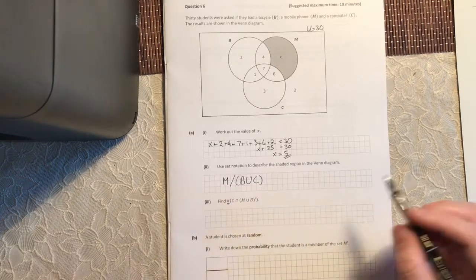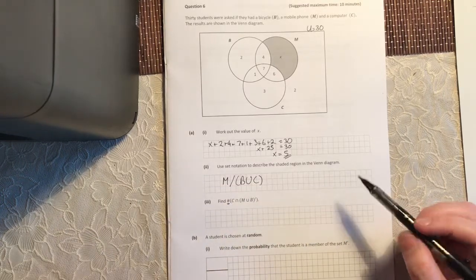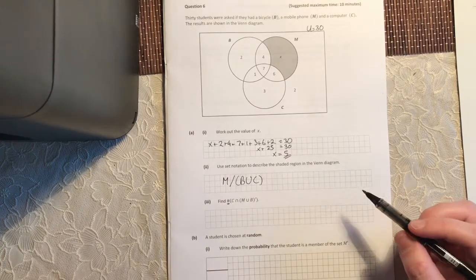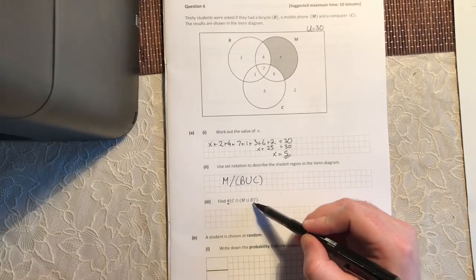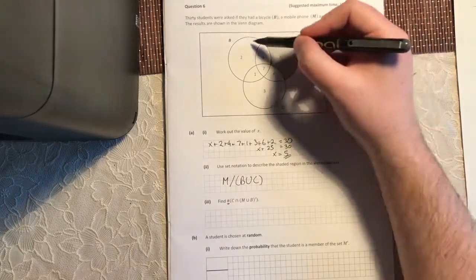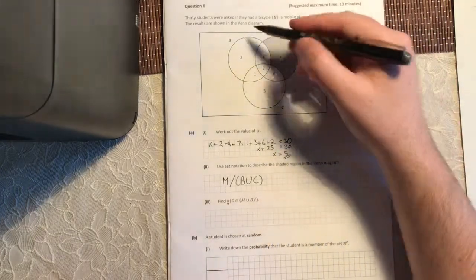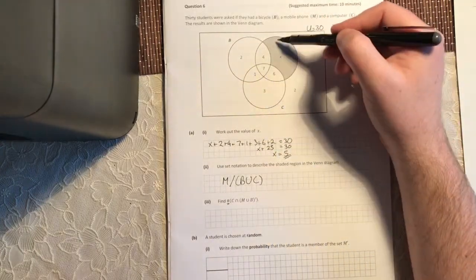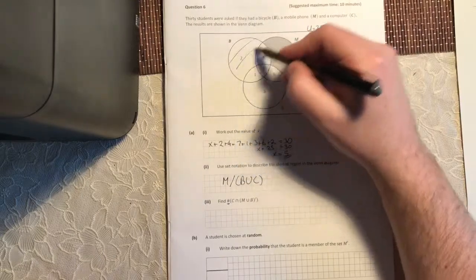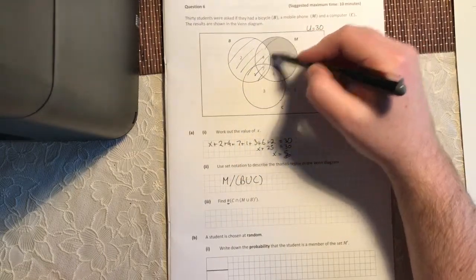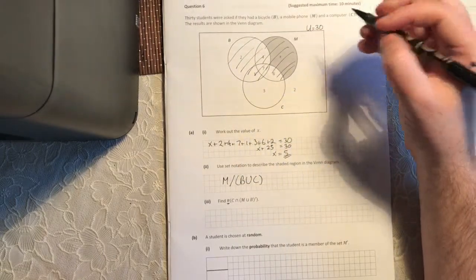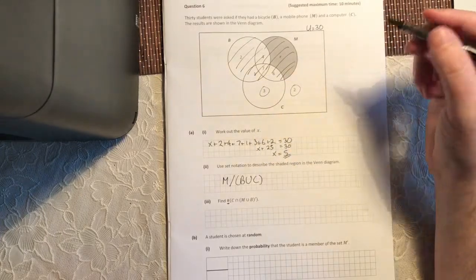Find the cardinal number of C intersect with M union B complement. Okay. Well, let's start with M union B. M union B is these two circles all together. This little complement means that, see these two circles? I want everything except those. So I do not want this whole circle. I do not want this whole circle. I'm only interested in this and this.